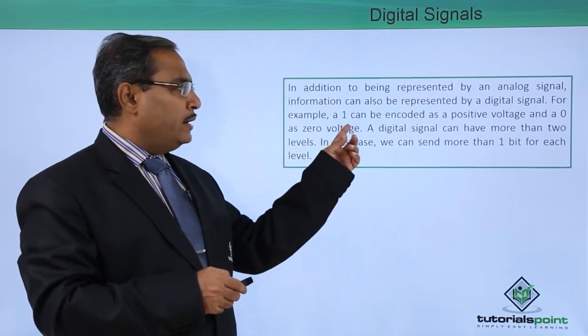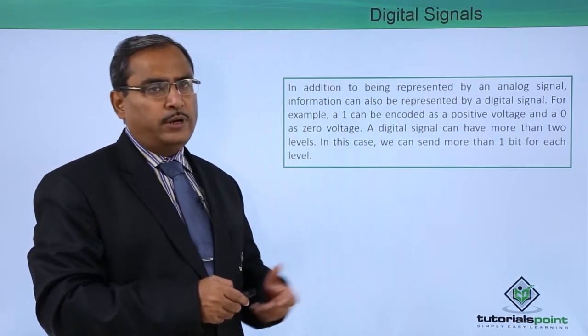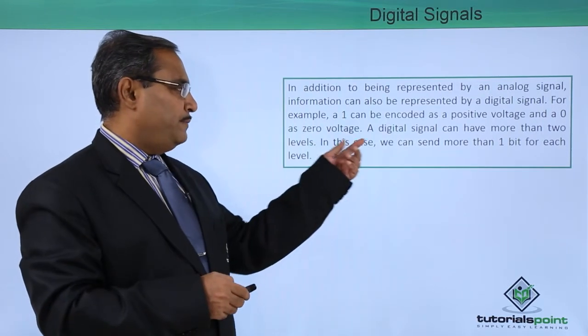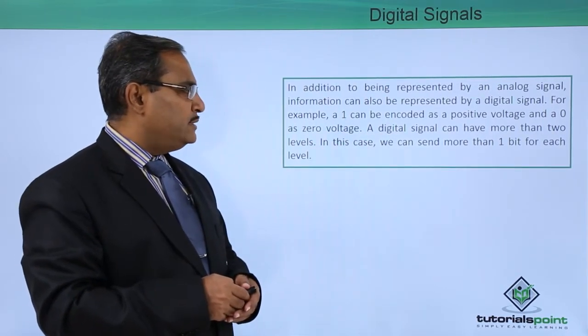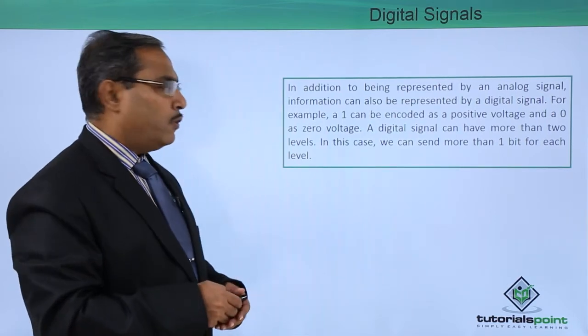For example, a 1 can be encoded as positive voltage and a 0 can be encoded as zero voltage. A digital signal can have more than two levels, and in this case, we can send more than one bit for each level.